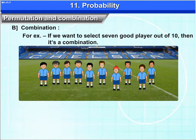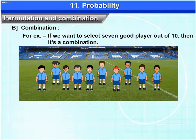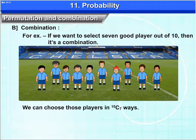For example, if we want to select 7 good players out of 10, then it is a combination. We can choose those players in 10C7 ways.